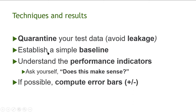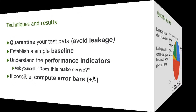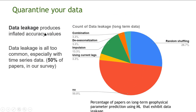You should also establish a simple baseline. In a study we did on weather prediction, 50% of the studies we looked at had data leakage. They took original data, did something to it, and then split it into training and testing — but they did the same processing to both, so the testing data was effectively affected by the training data. This is quite a serious problem.